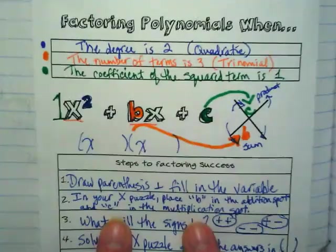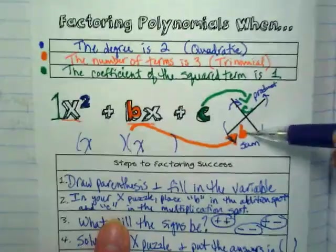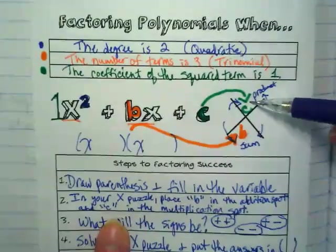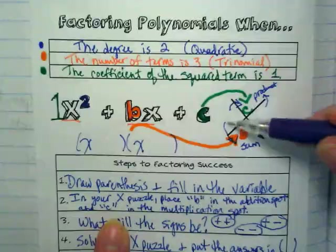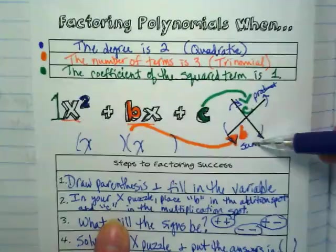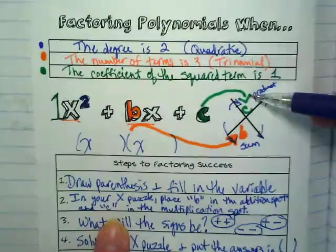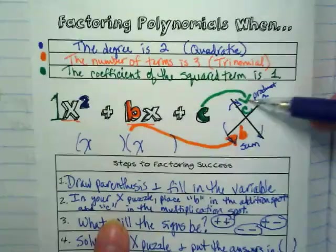Then we're going to create an X puzzle and we're going to place the B down here and the C up above so that we can find the two things that when they get added together make the C and when they're multiplied together they make the B and when they're multiplied they make the C.